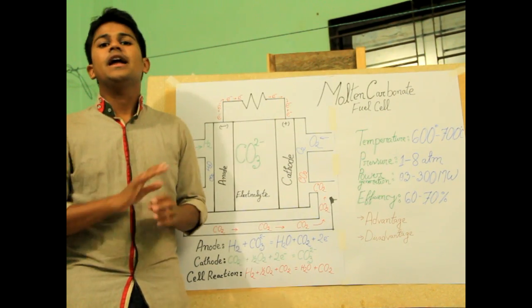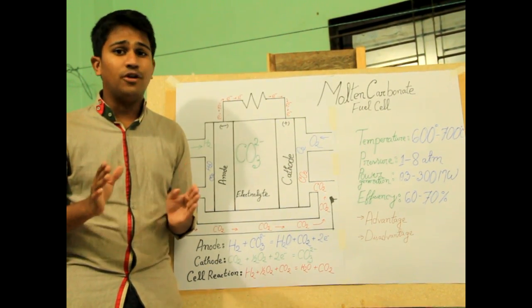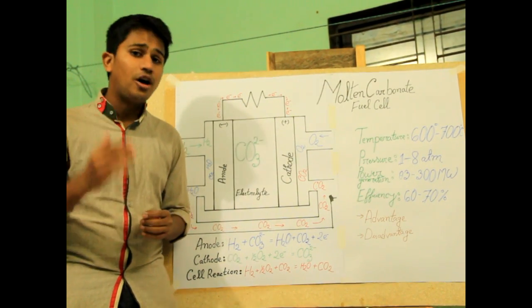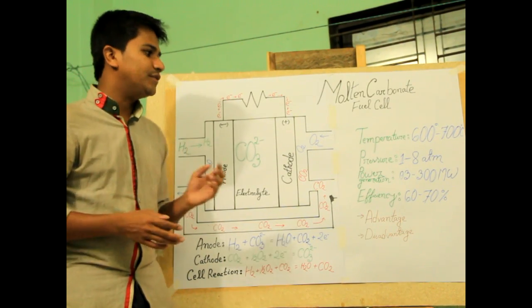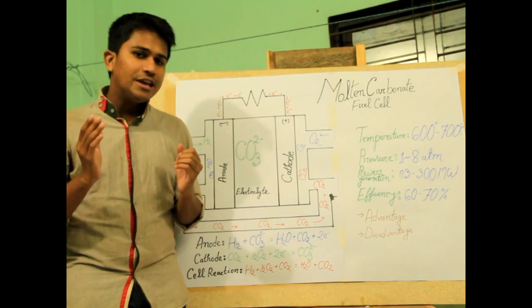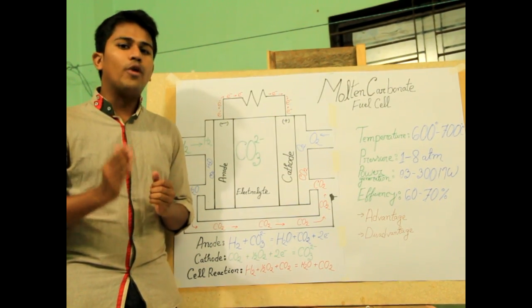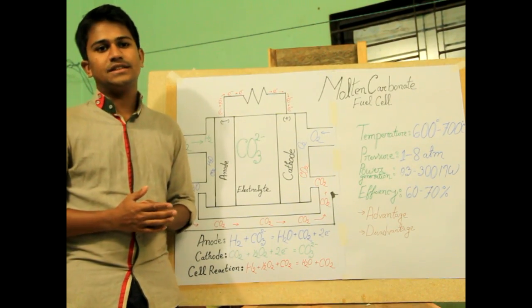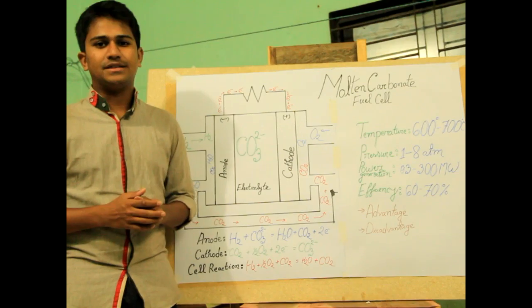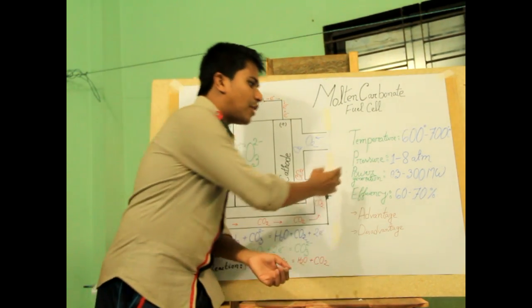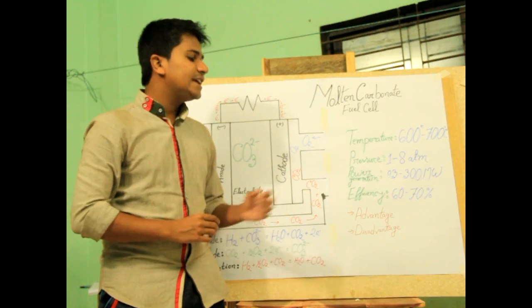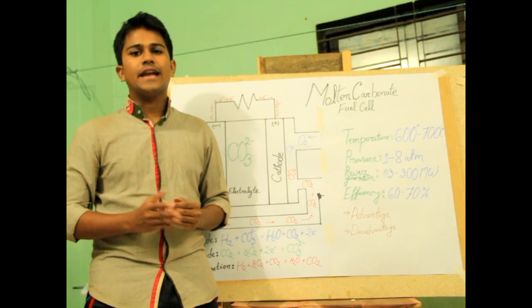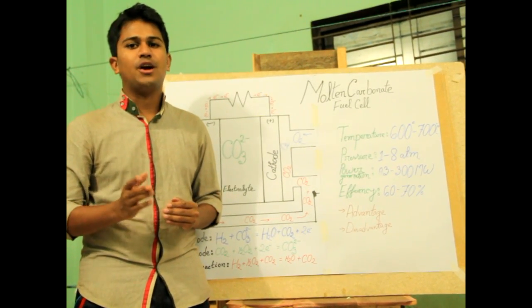The excess heat will help us to provide this H2. So just for this, this fuel cell needs no external reformer and doesn't need any kind of catalyst which also reduces the cost of this fuel cell. And if we can use this waste heat effectively, we can easily increase the efficiency from 60% to 85%. And here the power generation is 0.3 to 300 megawatts. But if anyone wants, they can increase it up to 10,000 megawatts.